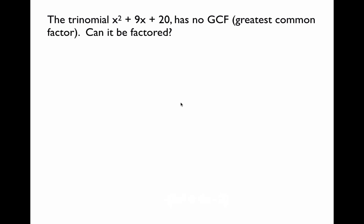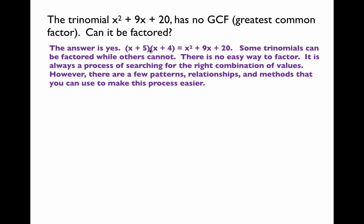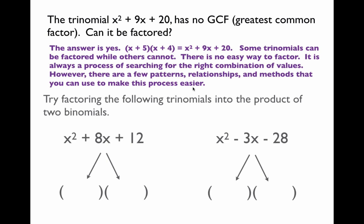The following trinomial, x squared plus 9x plus 20, has no greatest common factor. The question is: can it still be factored? The answer is yes — x plus 5 times x plus 4 equals x squared plus 9x plus 20. Some trinomials can be factored while others cannot, and there is no easy shortcut. It is always a process of searching for the right combination of values, but there are patterns and methods to make the process easier.